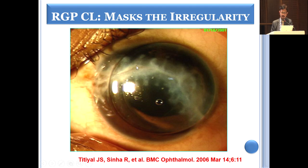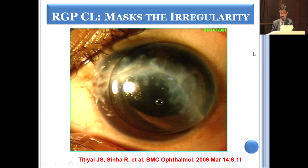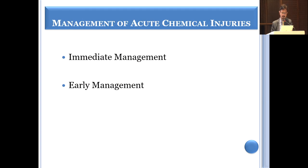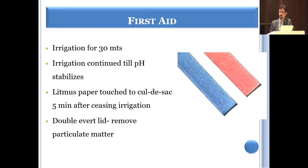Dense corneal scars after repair — especially when the lens has also been removed — cannot be rehabilitated with spectacles; RGP contact lens is a good option for visual rehabilitation. For chemical injury, immediate management is critical to minimize damage, with thorough irrigation as the first priority.